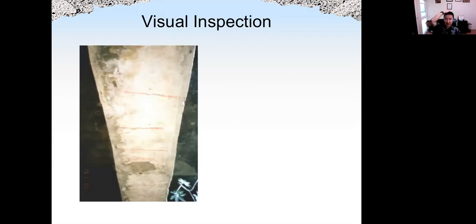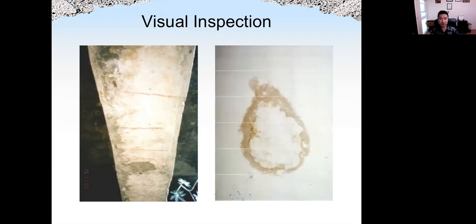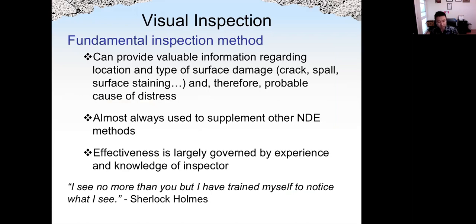The most important NDT test of all is visual inspection — we check the condition of concrete using our eyes. We use visual inspection before we do any type of other NDT method. It can give valuable information to a well-trained inspector. For example, if we see the pattern of the crack, its location, and the size of the crack, we can probably determine the possible causes of the deterioration of concrete.